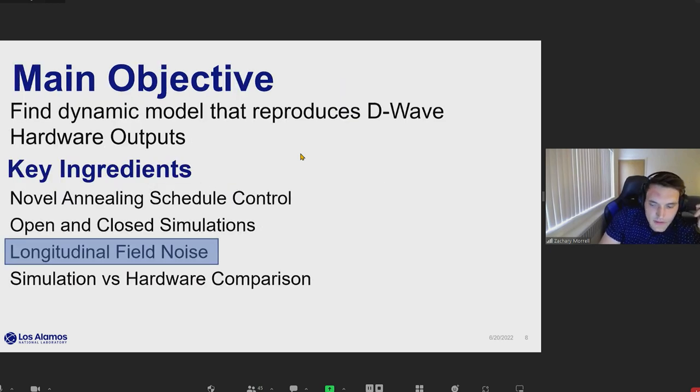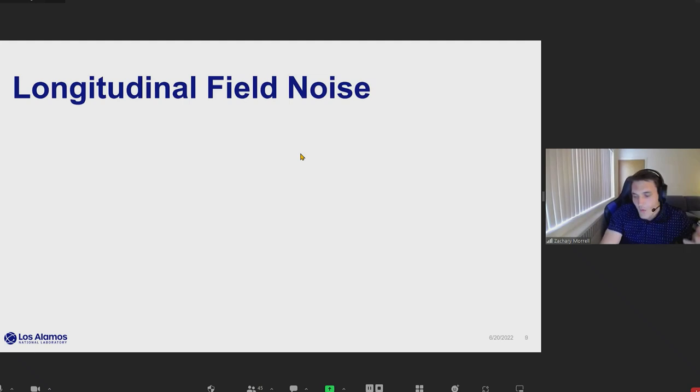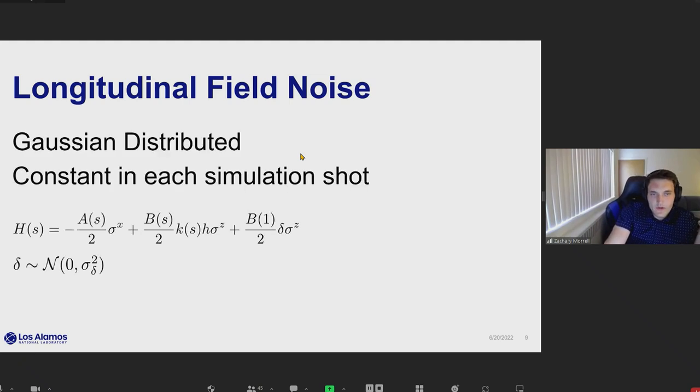Let me now get into this longitudinal field noise that I was talking about earlier. This ended up being something that we found was able to be almost like a secret sauce that would let us reproduce results that we were seeing on the hardware. We don't necessarily have the best intuition for why it would be there, but basically we find that there seems to be some sort of what we decided would be Gaussian distributed noise that is constant in each simulation shot.